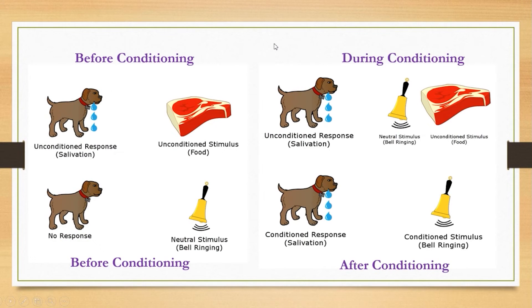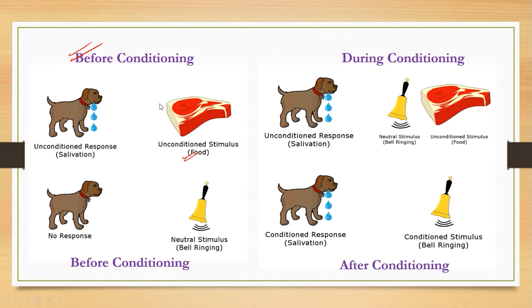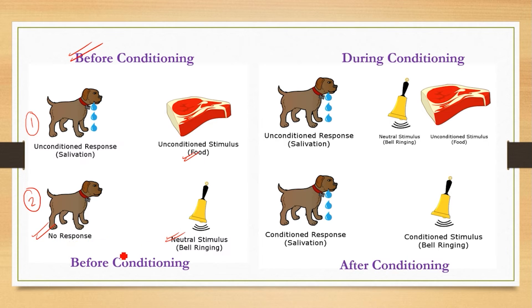This is the experiment. Before conditioning, step one: you have a pet dog, and when it is provided with food, it will salivate — this is an unconditioned response. Step two: before conditioning, when you just ring a bell, there is no response from the dog. The bell is a neutral stimulus — it does not cause the dog to salivate or react. This is the before-conditioning stage.